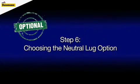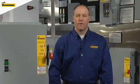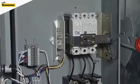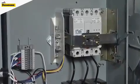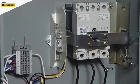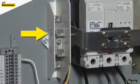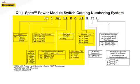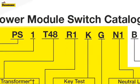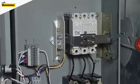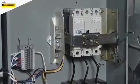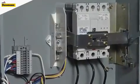Step six partly depends on your local code requirements for isolated neutral lug. Cooper Bussmann offers different options to match the load configuration of each power module. If your local code jurisdiction requires this feature, simply add the code that corresponds to the power module amperage chosen in step one. We specified 100 amps in our example, so we will need to add the N1 code to our part number sequence. If you are unsure and want to add this feature, this is a very inexpensive option.